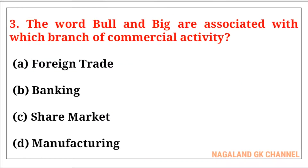Question number three: The words 'bull' and 'bear' are associated with which branch of commercial activity? The correct answer is option number C, that is the share market.